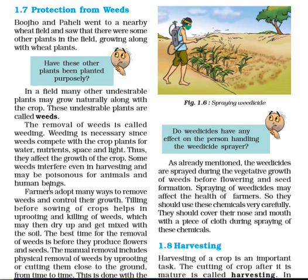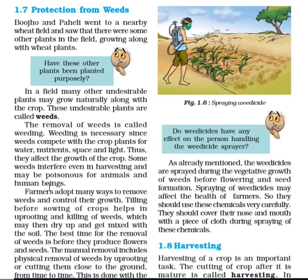Farmers adopt many ways to remove weeds and control their growth. Tilling before sowing of crops helps in uprooting and killing of weeds, which may then dry up and get mixed with the soil. The best time for the removal of weeds is before they produce flowers and seeds. Manual removal includes physical removal of weeds by uprooting or cutting them close to the ground from time to time.